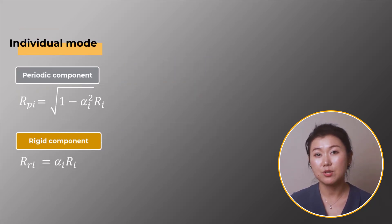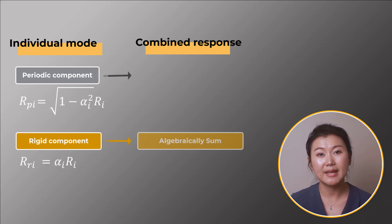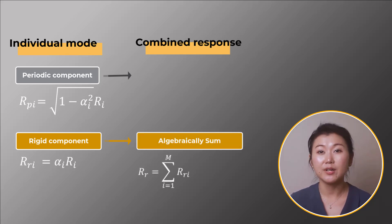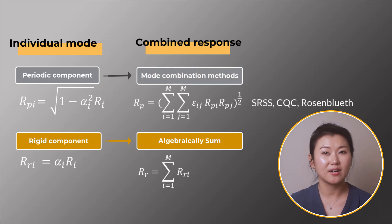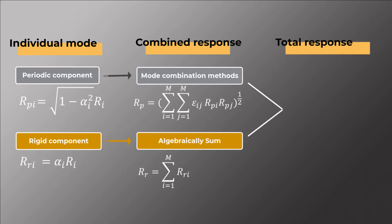For mode combination, the periodic response and rigid response are combined separately. We find the portion of rigid response of all the modes and combine them by plain summation. For the periodic response of all modes in the transition region, they are combined by SRSS, CQC, or Rosenblues methods. The periodic and rigid terms are then combined via SRSS. The coefficient alpha plays an important role as it defines the portion of rigid response.